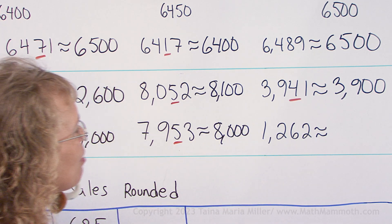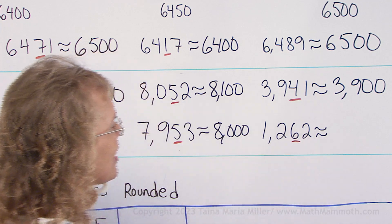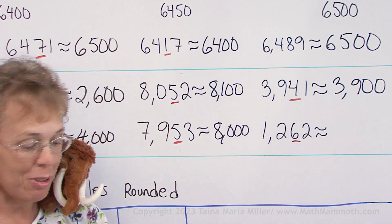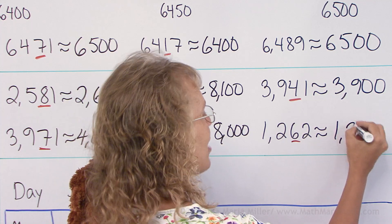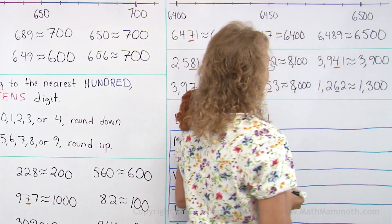And then lastly, 1262. Again, we round up. And after 1200 comes 1300. All right.